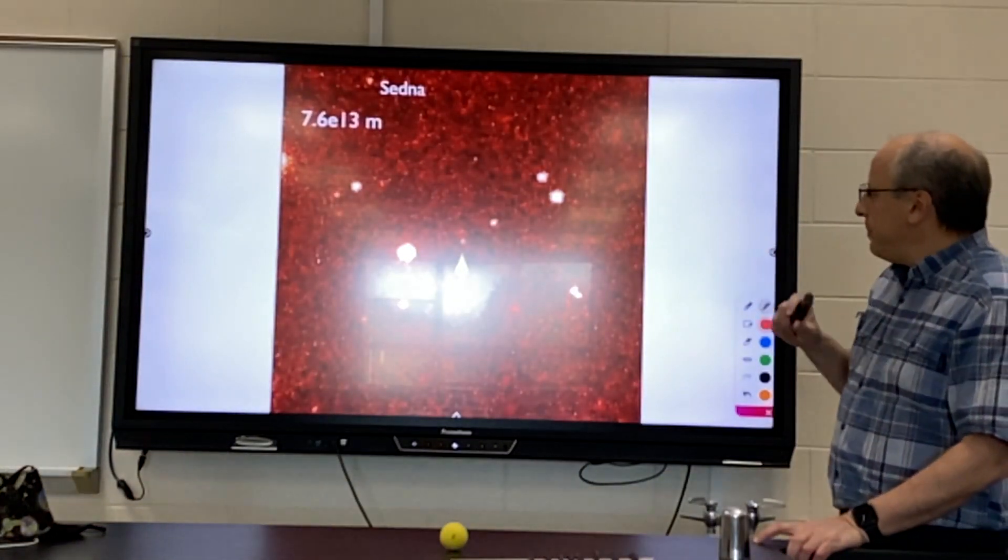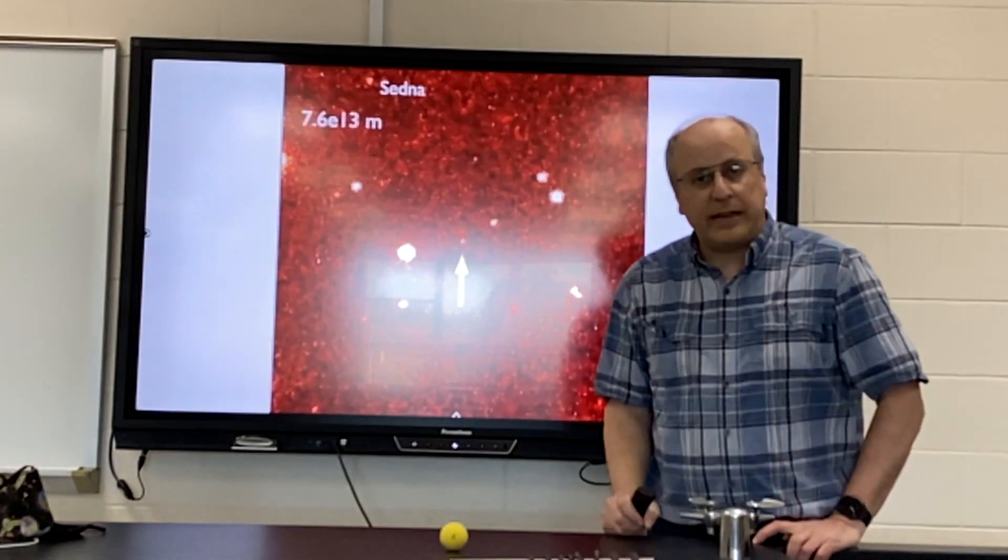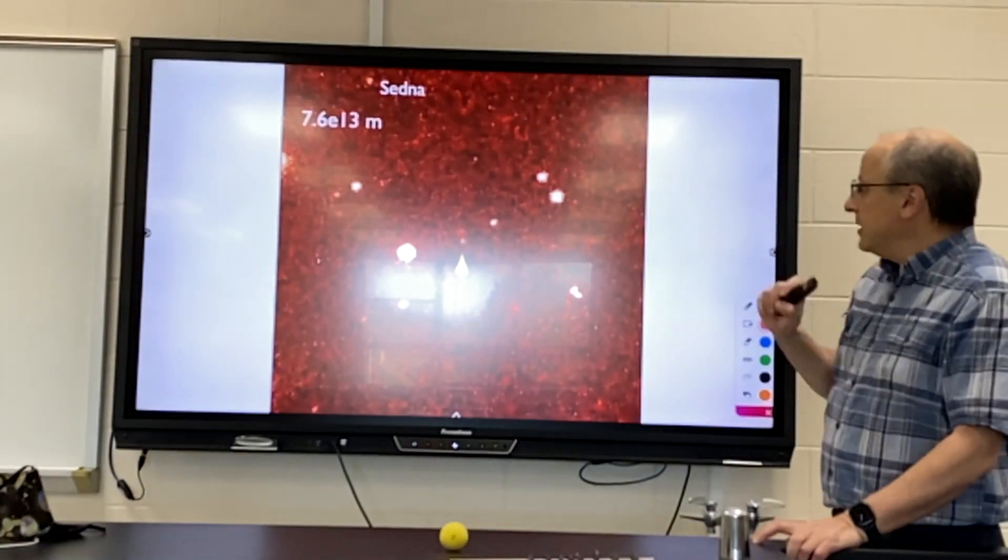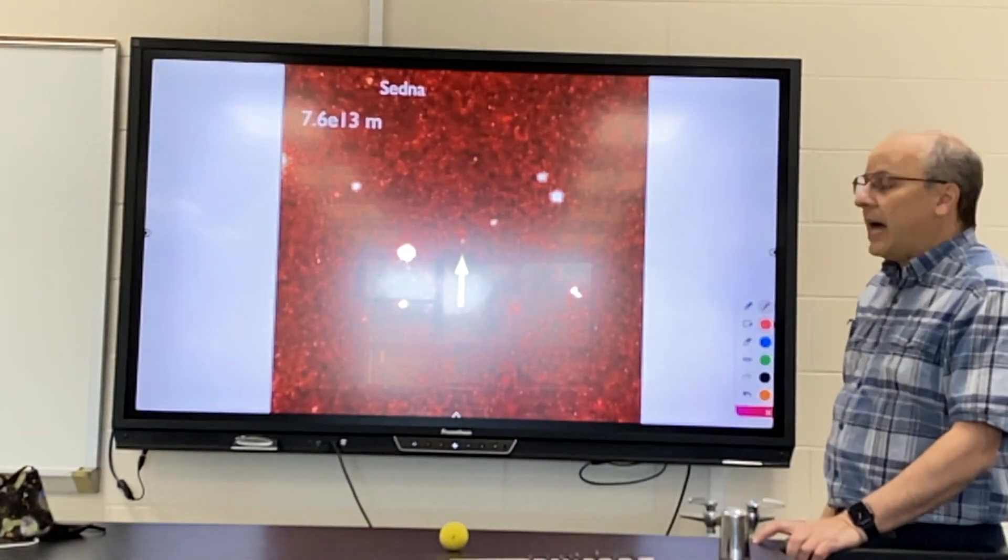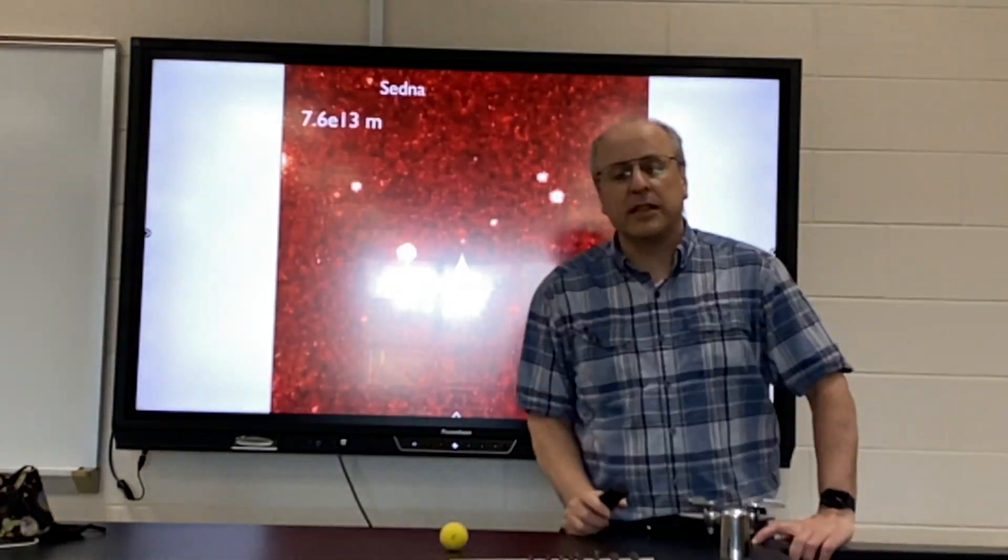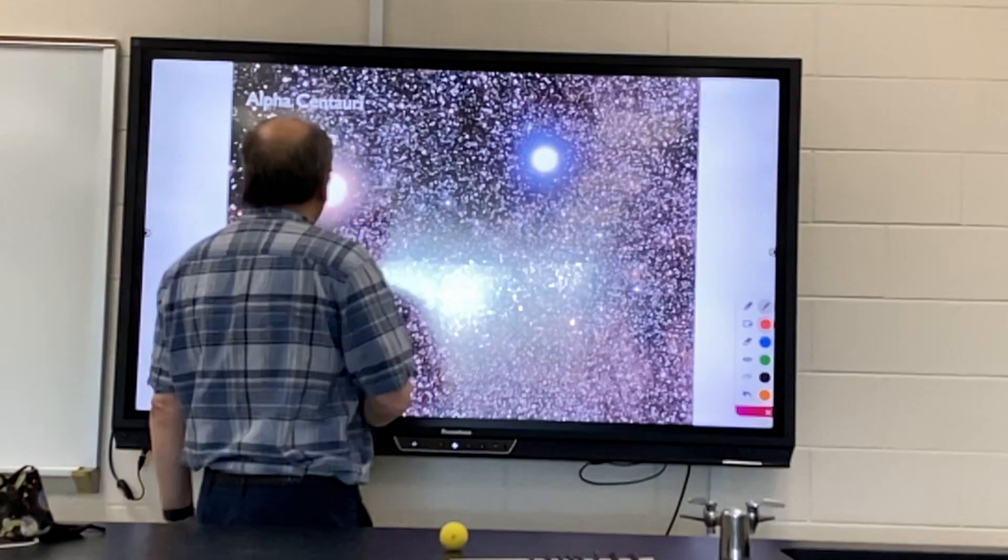Okay, so we have a planet even farther out than Eris. It's called Sedna. The distance is given there, and I'd like you to calculate how much time it takes the light to travel to the Earth.